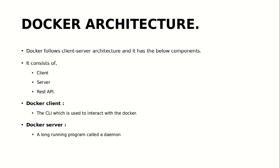The CLI, or Docker client, is what we use to run Docker commands and interact with the Docker engine. These commands will be passed on to a Docker server, which is a daemon — always running in the background. The Docker server is a long-running program and it is a daemon. Communication between the Docker client and Docker server is done by the REST API, which acts as an interface between them. So these are the three main components of Docker architecture: Docker client, Docker server, and Docker API.